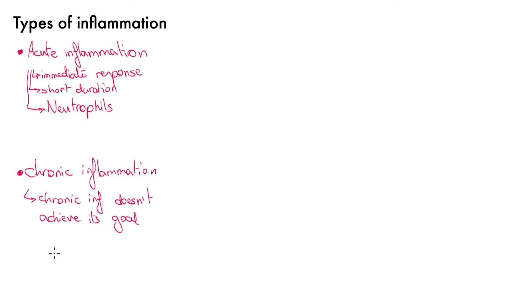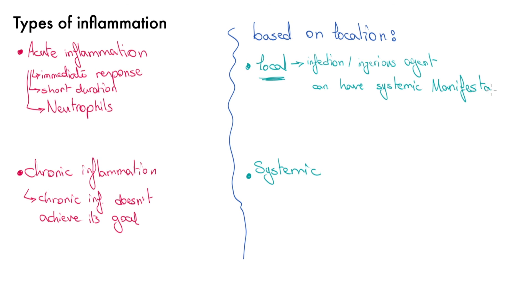Inflammation can also be categorized based on its location, so it can be local or systemic. Local inflammations happen in response to a local infection or injurious agent. Despite the fact that most of the response is limited to the local site of injury, local inflammation can also have systemic manifestations. Just think of fever in the case of a bacterial or viral pharyngitis.